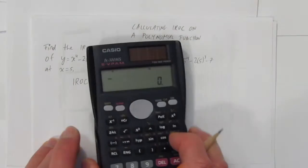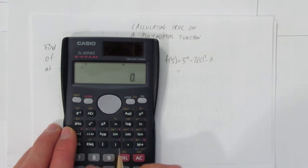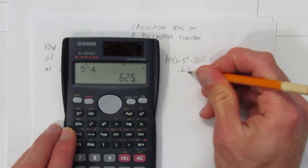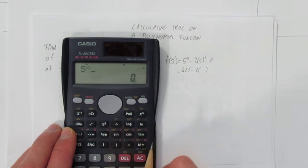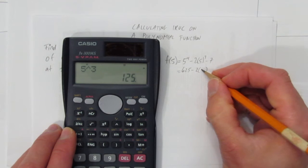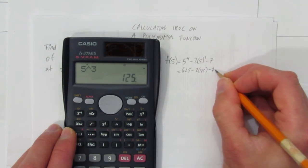So, we'll take out a calculator and we'll calculate 5 to the power of 4, 625, minus 2 times 5 to the power of 3. You might be able to do that in your head. 125 minus 7.